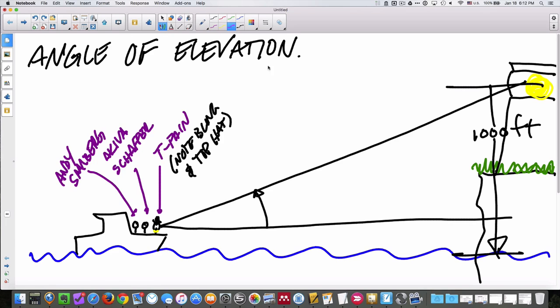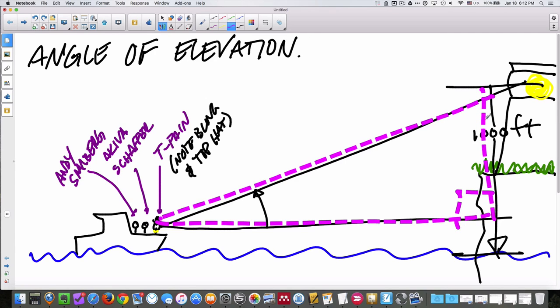Note that we're going to get a right triangle here. And with this thousand feet and this angle of elevation, which we would typically give you, at least in a boat lighthouse type problem, we'd give you like, I don't know, 22 degrees? Something like that.